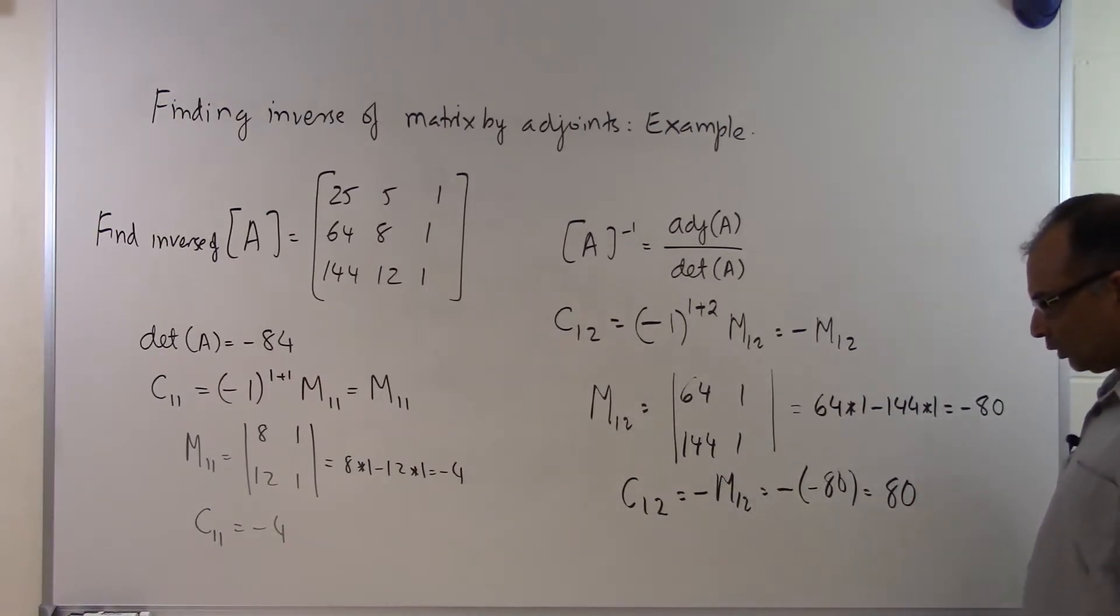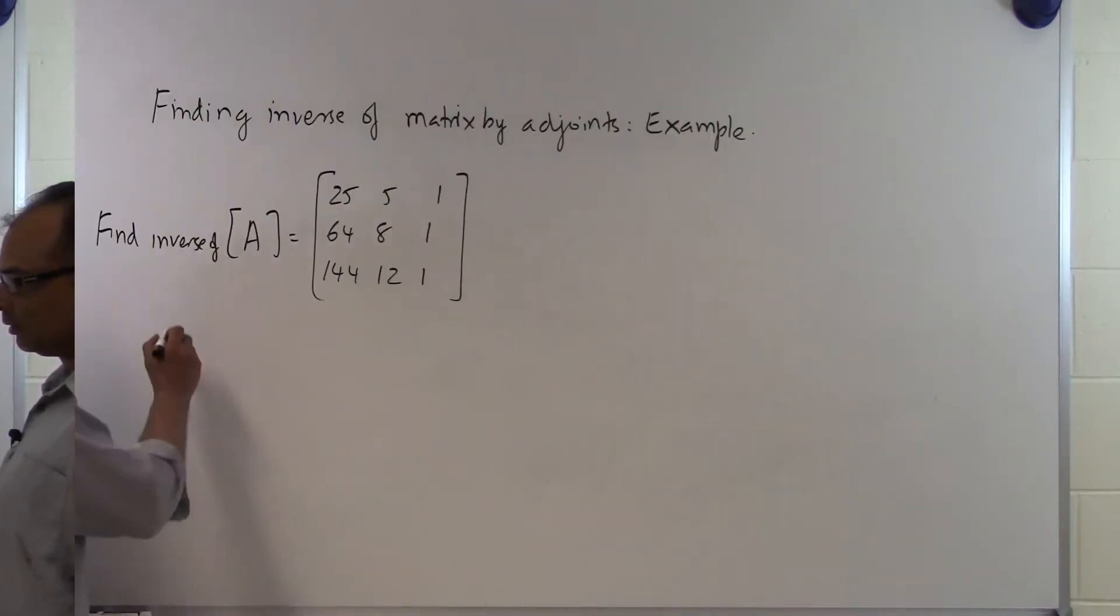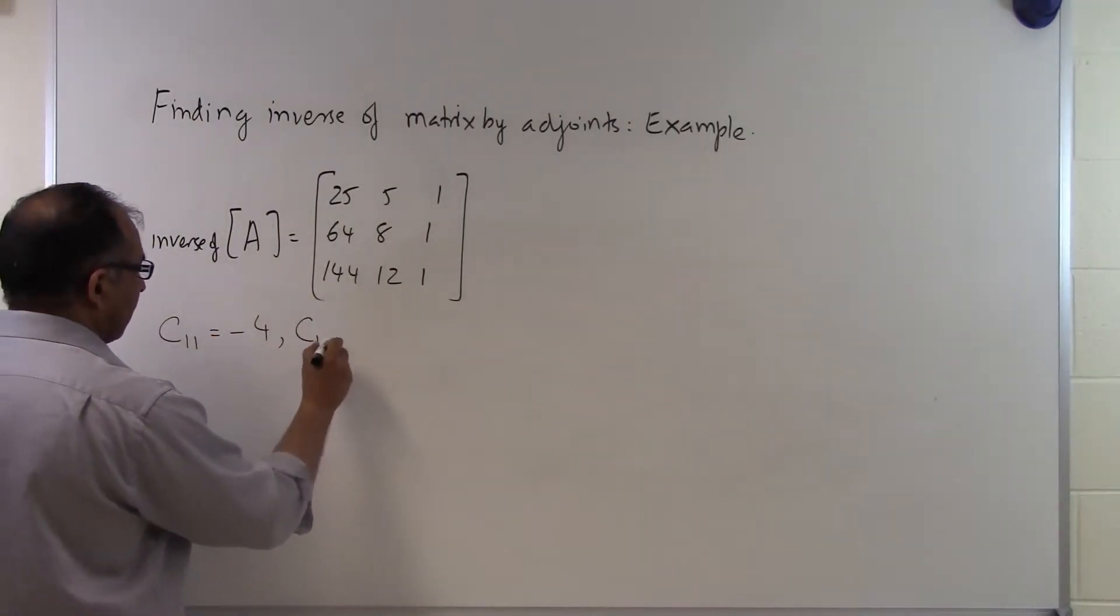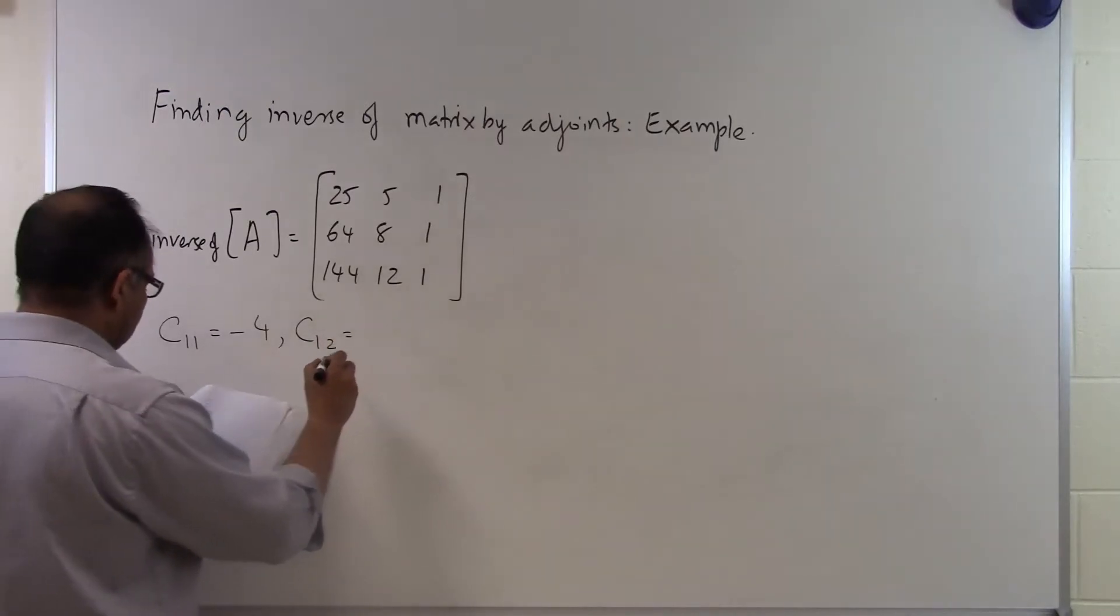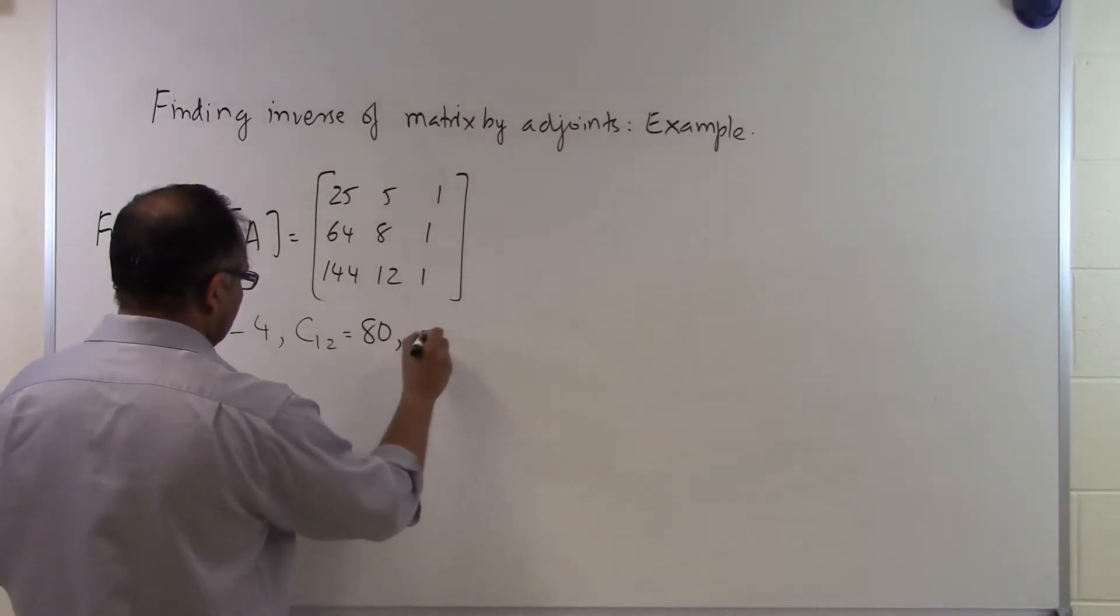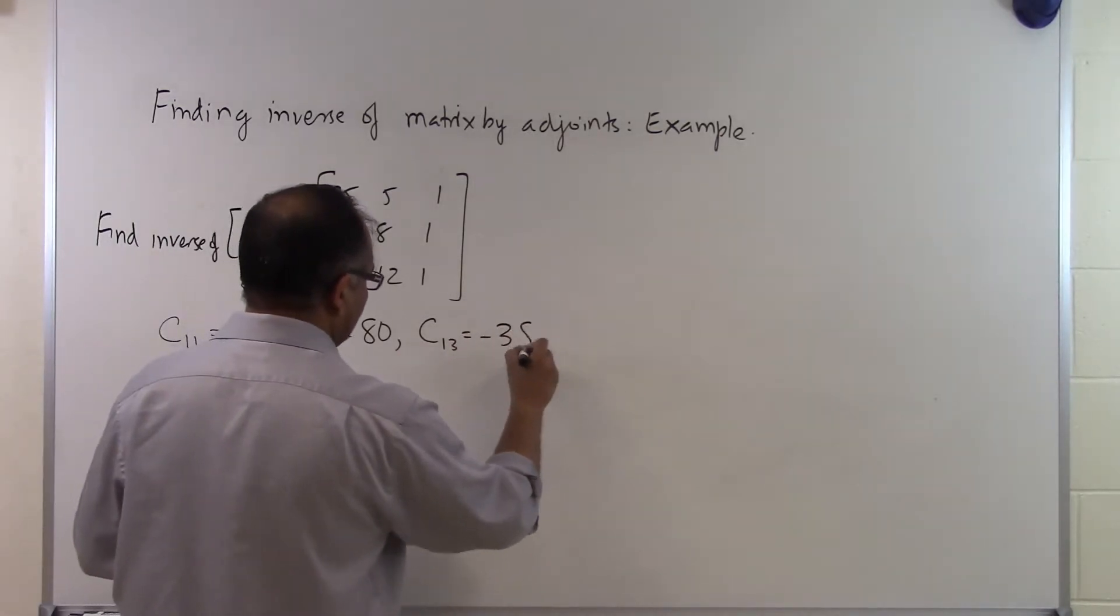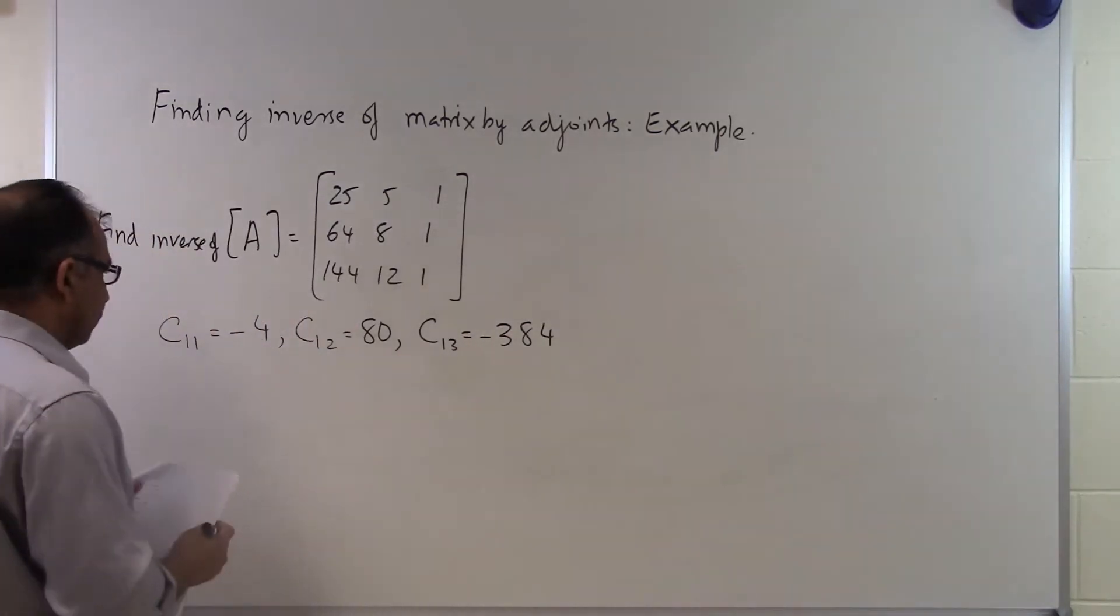You get the point how you want to calculate the cofactor matrix corresponding to each of the nine elements which you have in the A matrix. We found C11 is equal to minus 4, C12 is equal to 80, and we can similarly find C13 is equal to minus 384.